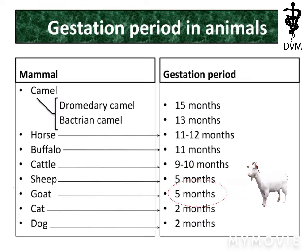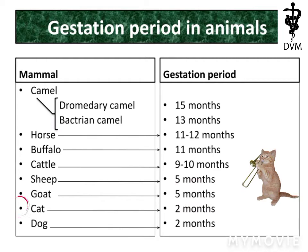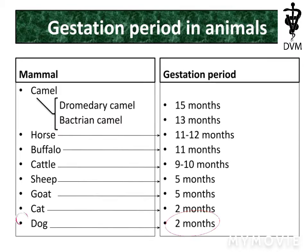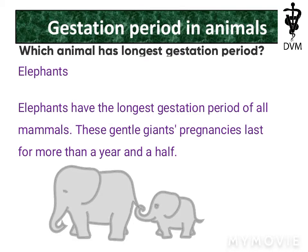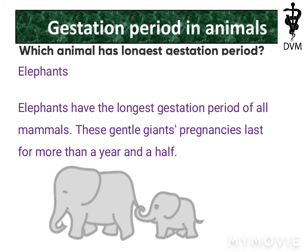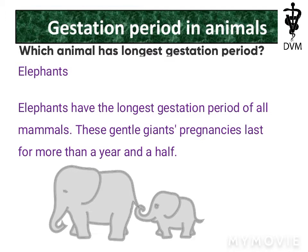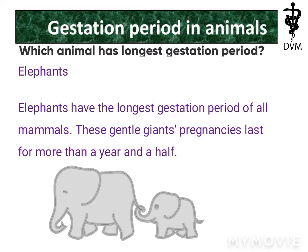The cat has a gestation period of only two months, and the dog also has a gestation period of two months. Elephants have the longest gestation period of all mammals — these gentle giants' pregnancies last for more than a year and a half.